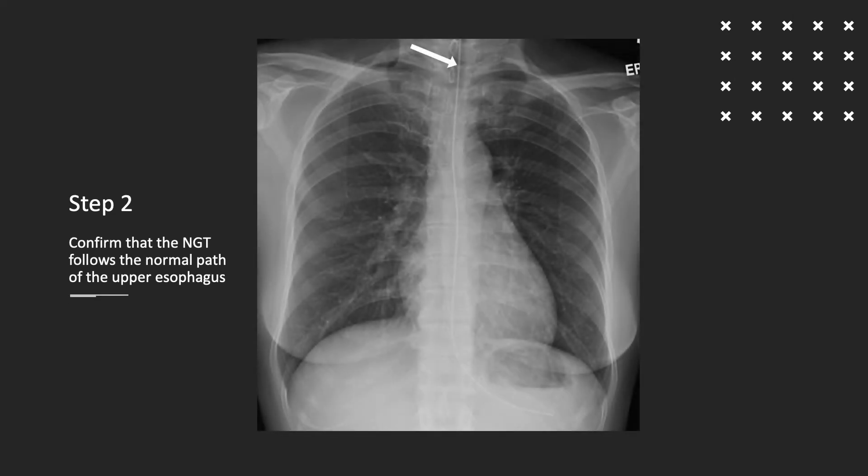Follow the path of the nasogastric tube in the upper thorax and confirm the tube passes vertically in the midline, overall slightly to the left of the trachea, and then adjacent and immediately to the right of the aortic knuckle.